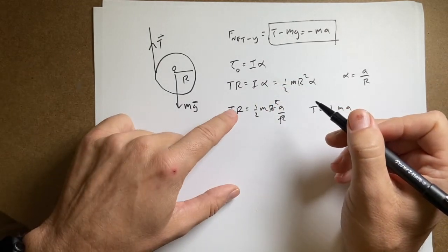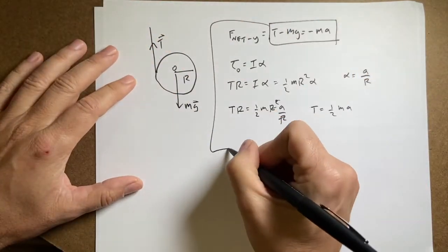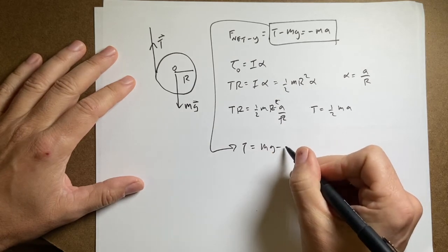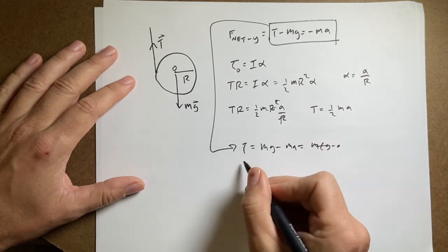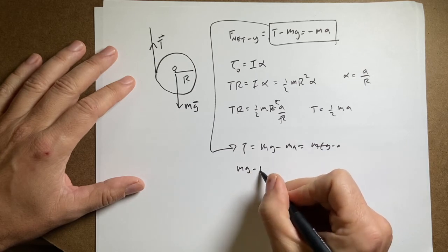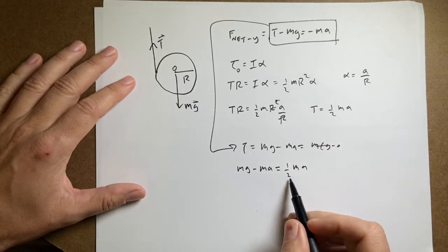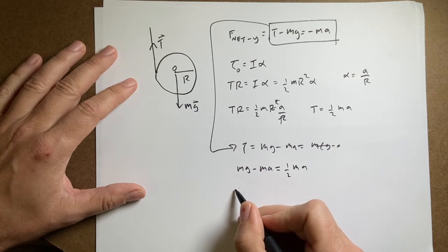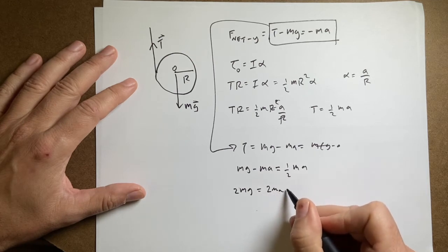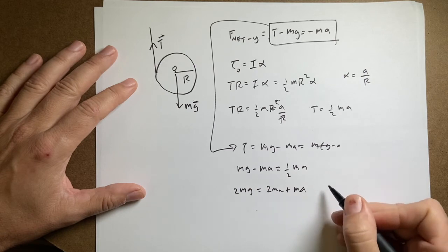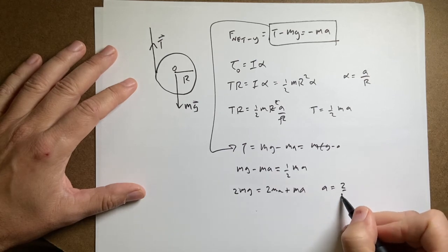Solving T = (1/2)m·a for a gives a = 2T/m. Substituting into the force equation: T − mg = −m·(2T/m) = −2T. So T + 2T = mg, giving 3T = mg, and T = mg/3. That matches the Lagrangian result.